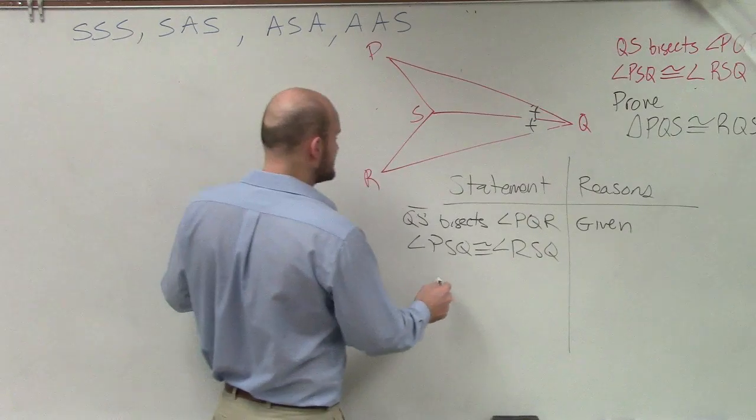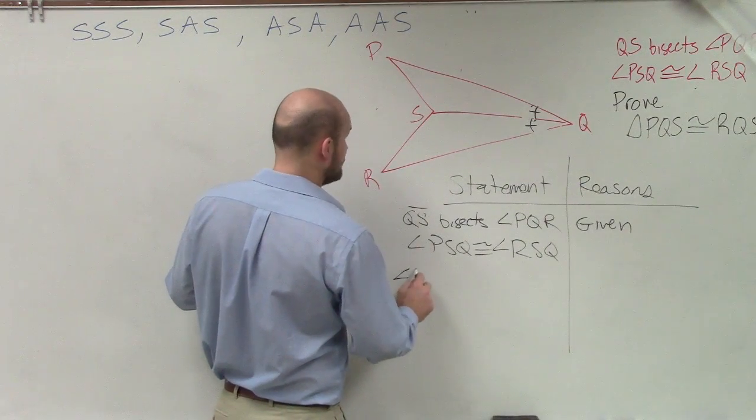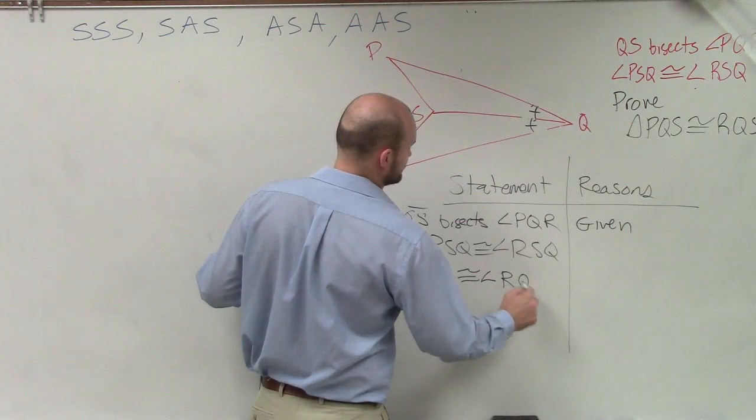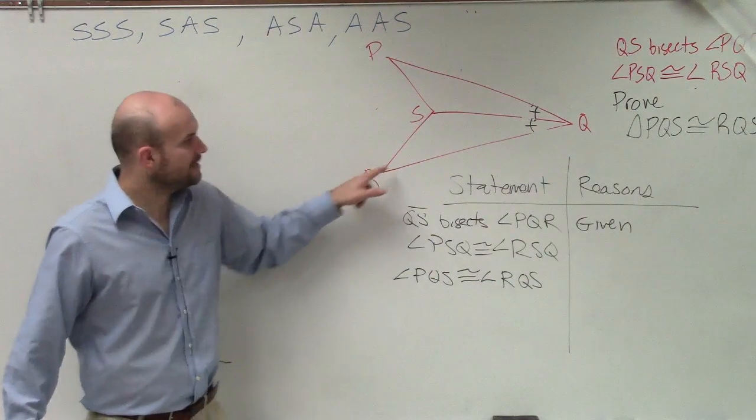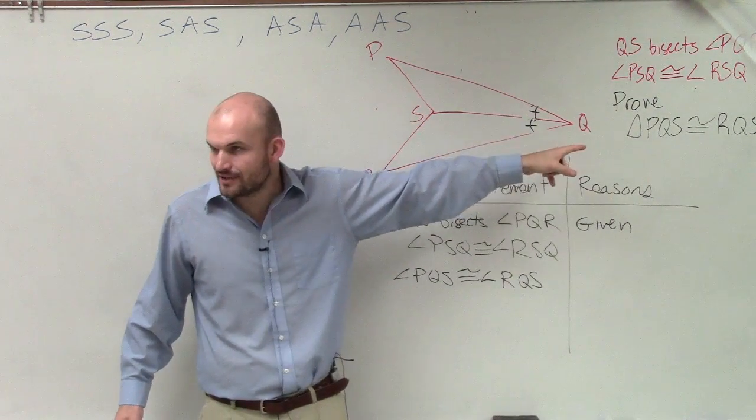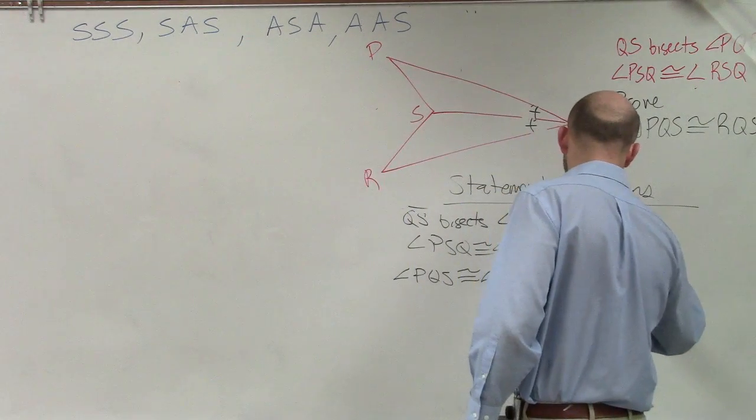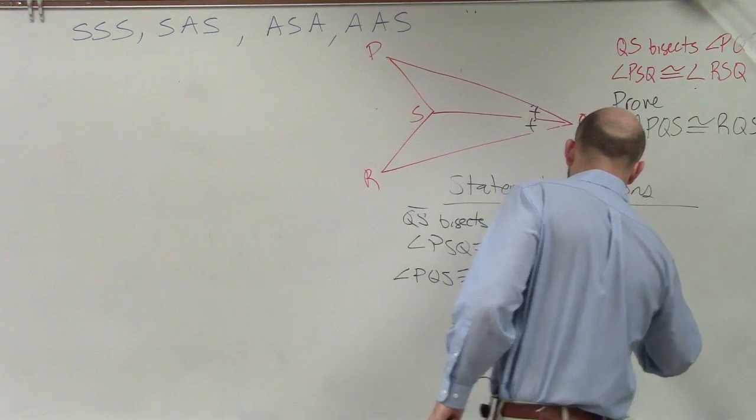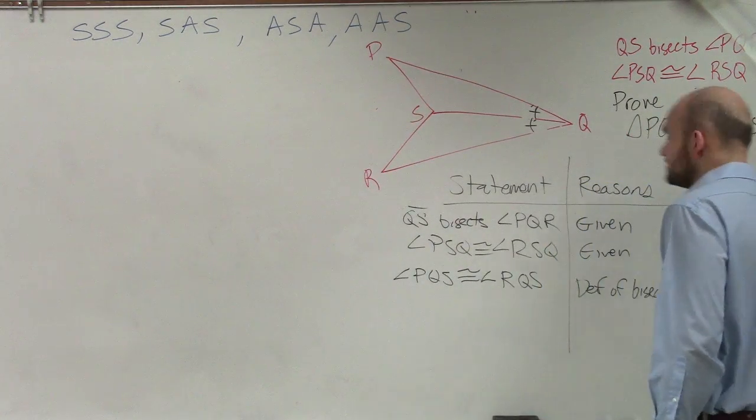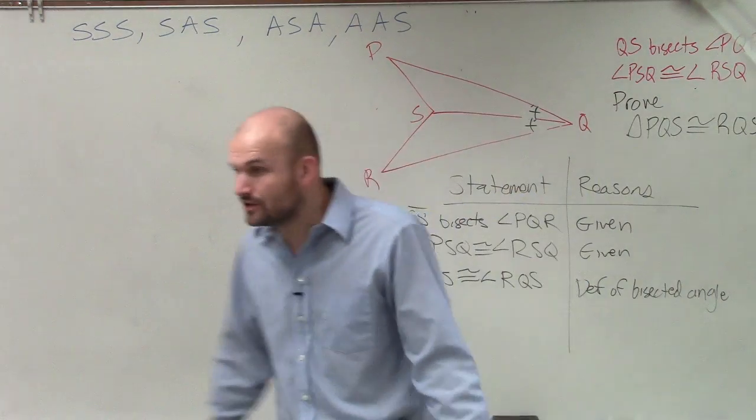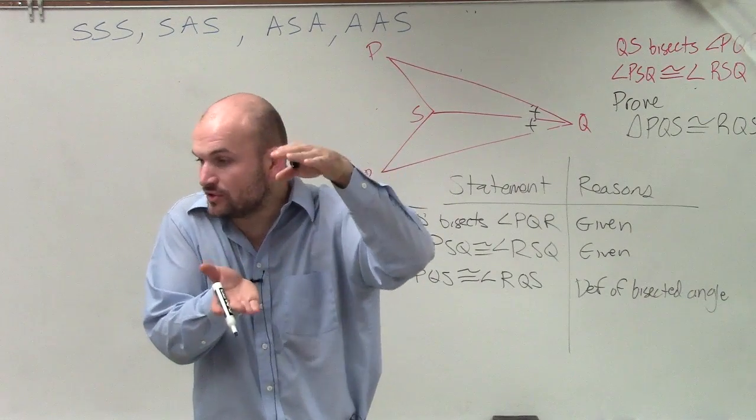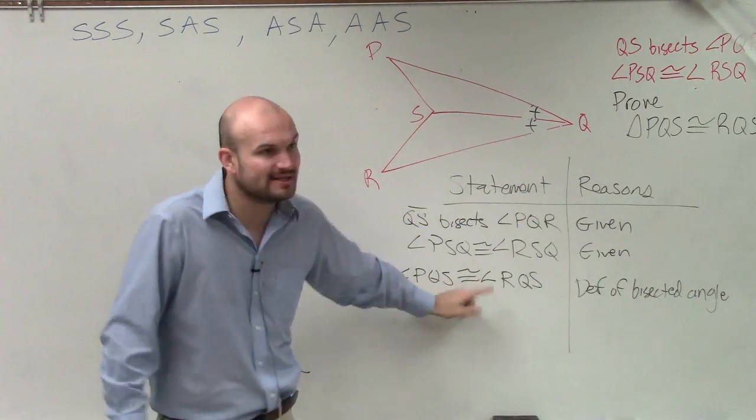So Samantha, the next thing I'm going to write down is I'm going to say angle PQS is congruent to angle RQS. Why are these two angles equal to each other? Because we are told that this line bisects the angle. So we can just say the definition of a bisecting angle. You can say it's the definition of a bisected angle. If an angle is bisected, that means both parts of those angles are now going to be equal to each other. So you can now write that in there.